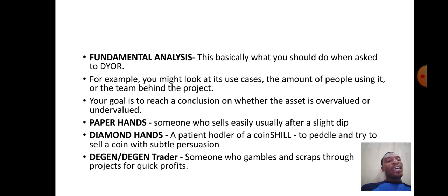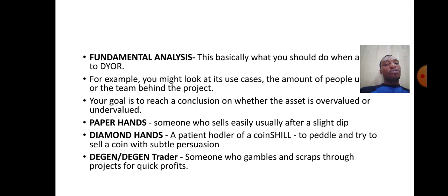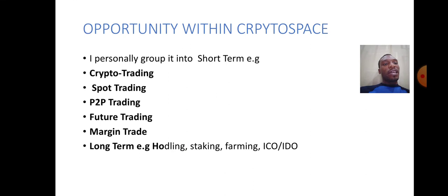Paper hand: someone who sells easily, usually after a slight dip. It has happened to me when I started my cryptocurrency journey. Because you're scared and the coin dips a little, you sell off immediately rather than lose more — that person is called a paper hand. Diamond hand is a patient holder — a hodler of a coin. Shill means to promote and try to sell a coin with subtle persuasion. Digit trader is someone who gambles and scrapes through projects for quick profit.